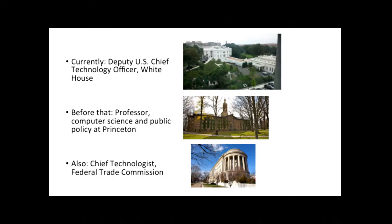I've been there about two months. Before that, I spent about 20 years as a professor at Princeton — first in computer science, and then for the last 10 years also in public policy. Within computer science, the bulk of my work has been in security and privacy, more from a systems standpoint than crypto, though I had a few forays into the applied crypto literature. I also spent a year and a half at the Federal Trade Commission as their first chief technologist.